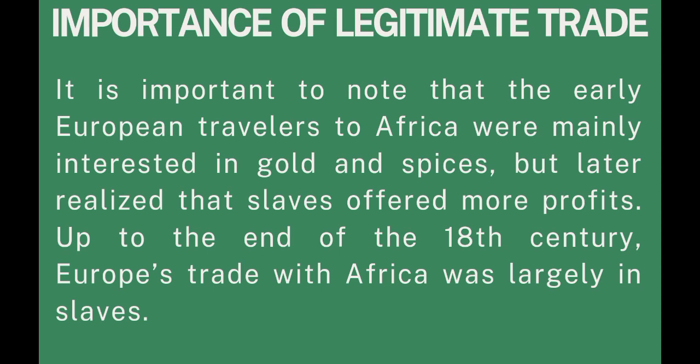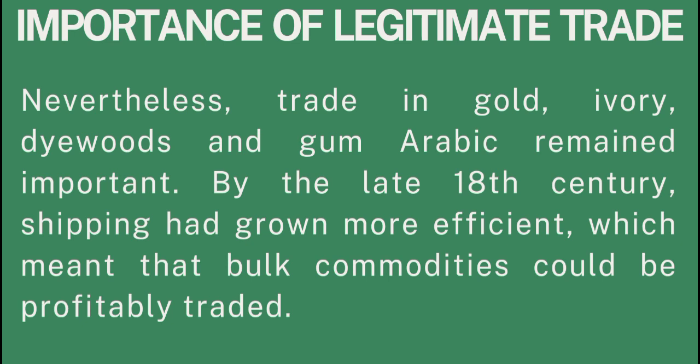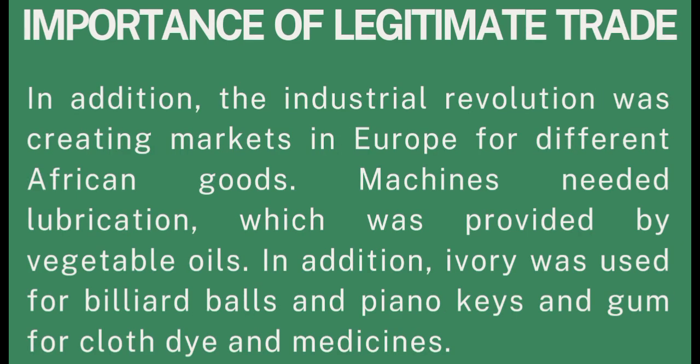Up to the end of the 18th century (1700–1799), European trade with Africa was largely in slaves. Trade in commodities such as gold, ivory, dyewoods, and gum existed but was not in high demand as slaves were. By the late 18th century, shipping had grown more efficient, meaning bulk commodities could be profitably traded. In addition, the Industrial Revolution was creating markets in Europe for different African goods.